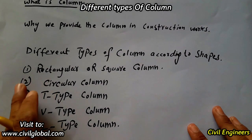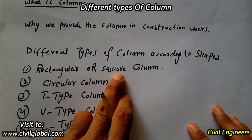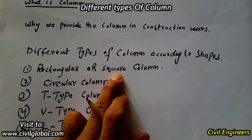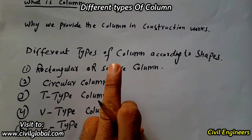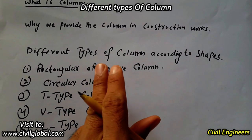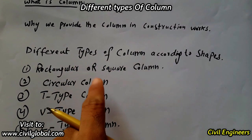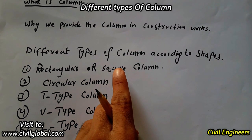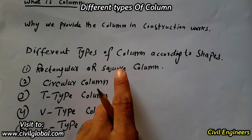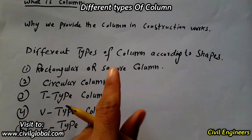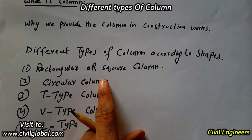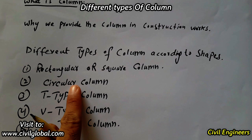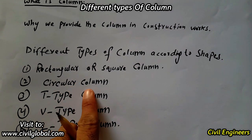First, where do we design the rectangular or square column? This type of column is designed in the construction of buildings. A square or rectangular column can be constructed easily and is specially used for room construction or shop construction because it can support heavy loads.